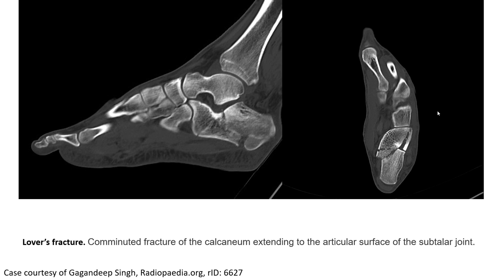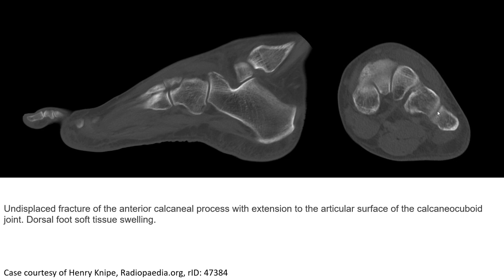This is a CT example of a lower fracture — a comminuted fracture of the calcaneus extending to the articular surface of the subtalar joint. Another CT demonstrates a fracture of the anterior calcaneus process with extension to the articular surface, involving the anterior calcaneonavicular joint, with dorsal foot soft tissue swelling.